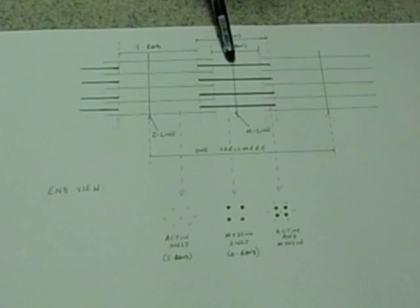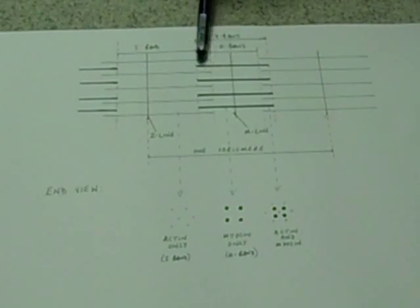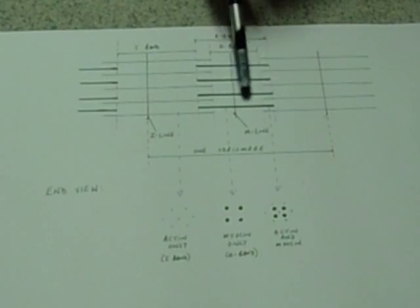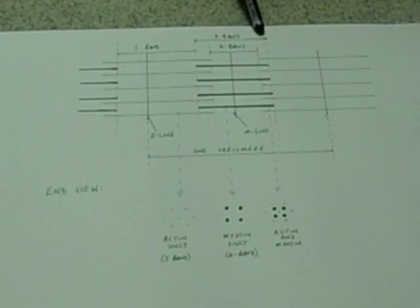The M line is where the myosin filaments are attached, these thicker filaments. The entire length of the myosin filaments are called the A band and that's a fixed length of band. The myosin filaments don't change in length, but the actin filaments don't change in length either.